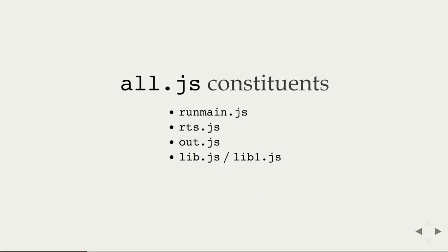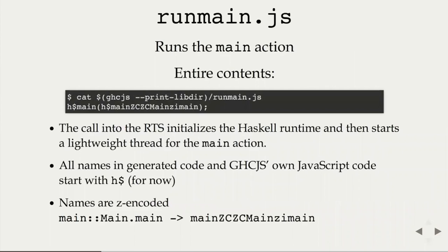The shortest and easiest one is run_main.js. It really just calls the GHCJS Haskell runtime system's H$main function with the name of the main action of the program. That's really what starts it. The main function initializes the runtime and starts to prepare for the action. This also serves as an easy example for naming conventions: all names that GHCJS itself generates start with H$, as a convention to prevent too much namespace pollution.